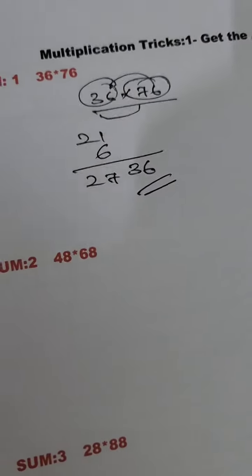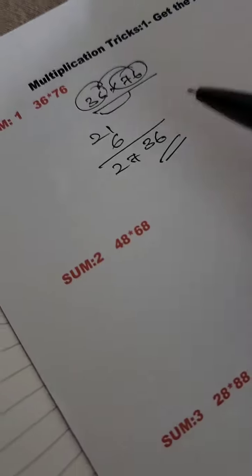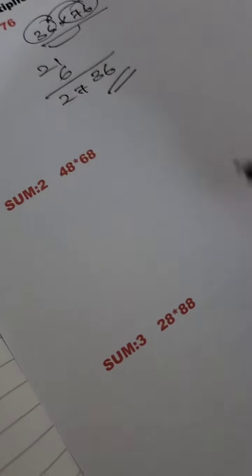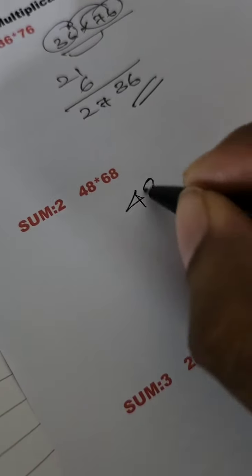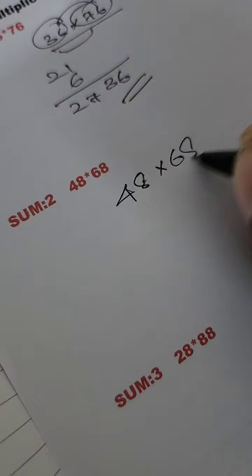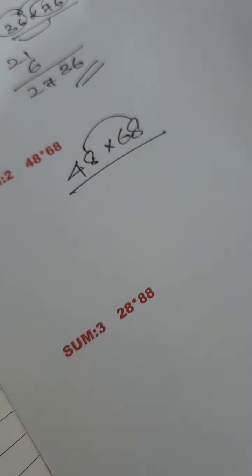Hello friends, in video one we saw how to use the trick to solve 36 cross. Now we're going to solve 48 × 68. Just write 48 multiplication 68. First multiply 8 into 8.